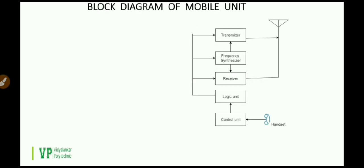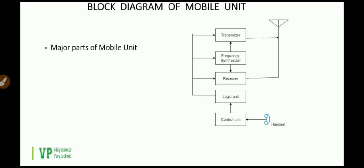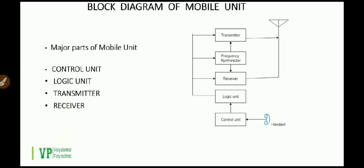This is the block diagram of the mobile unit. The five blocks which you are seeing here are the major parts of this system. The major parts of the mobile unit are: control unit, logic unit, transmitter, receiver, and frequency synthesizer.